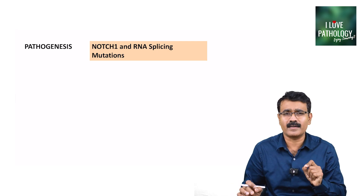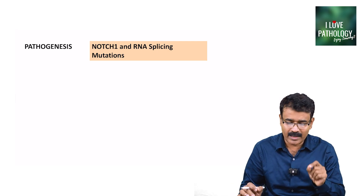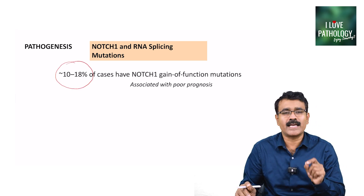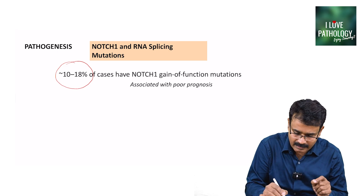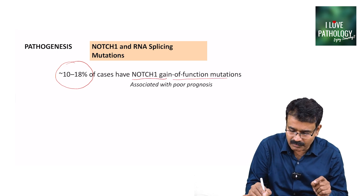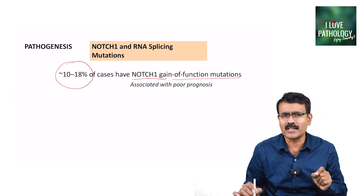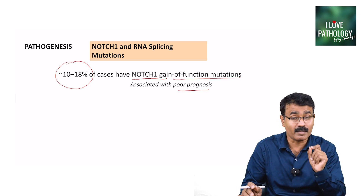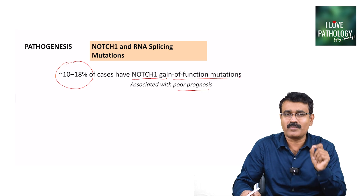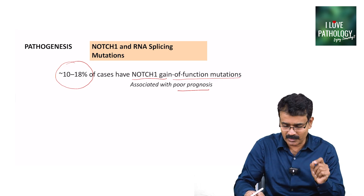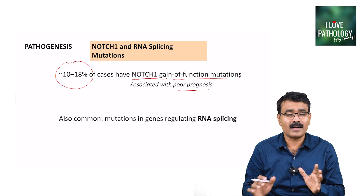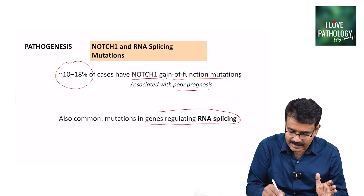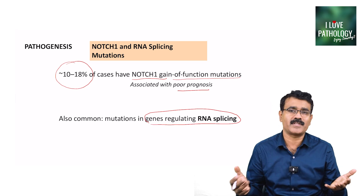The third important abnormality is NOTCH1 and RNA splicing mutations. 10 to 18 percent of SLL cases have NOTCH1 gain-of-function mutations, which are associated with poor prognosis. It is very important to note that the presence of NOTCH1 mutation is associated with poor prognosis. Apart from these, genes regulating RNA splicing can also be mutated in CLL.